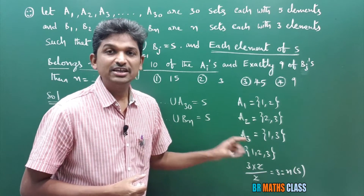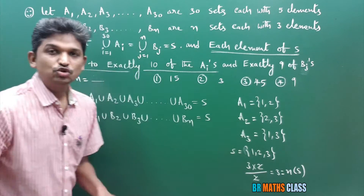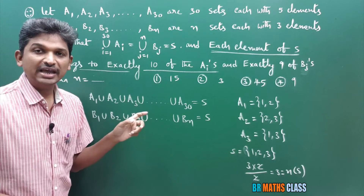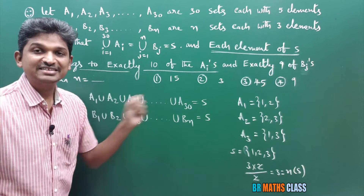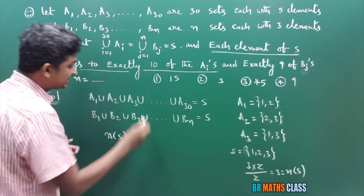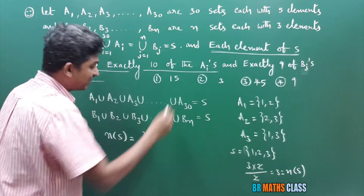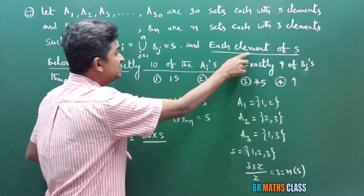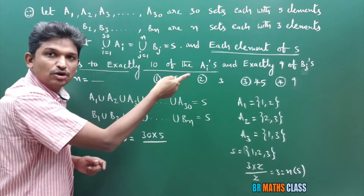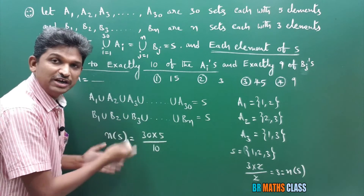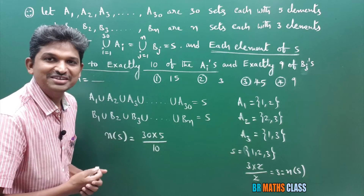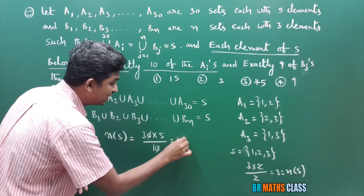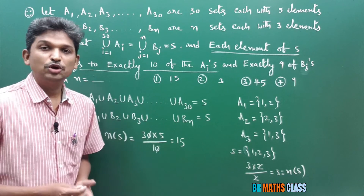This is the smaller example I took to understand things more easily. Now, what is S? S is the union of all 30 sets. I will calculate the number of elements in set S. Total how many sets are there? 30 sets, each set consists of 5 elements: 30 into 5, divided by — each element of S belongs to exactly 10 of the Ai's — so divide by 10. The zeros cancel and you get 15. So number of elements in S is 15.